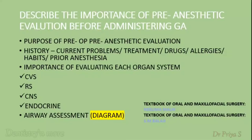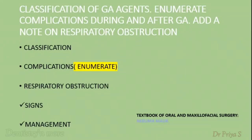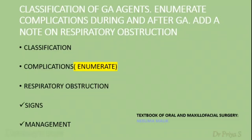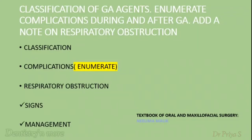The next question covers classification of GA agents, complications during and after GA, and a note on respiratory obstruction. Classification of general anesthetic agents can be referred from any pharmacology textbook. For complications of general anesthesia during the peri-operative and post-operative period, refer to either Neelima Malik or SM Balaji — both books have tabulated the complications, so just enumerate them. For respiratory obstruction specifically, elaborate under signs and management: write the signs of upper airway obstruction and the management part.